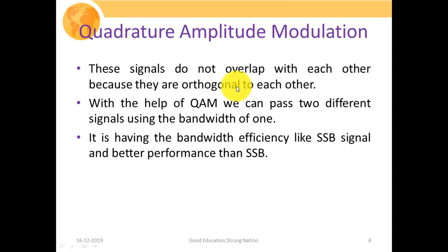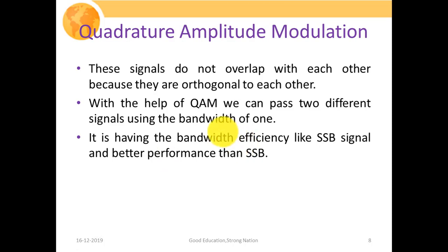Both signals possess the same frequency but will not overlap or interfere with each other since they are 90 degrees phase apart — that is, they are orthogonal to each other. With QAM we can pass two different signals using the bandwidth of one. QAM achieves bandwidth efficiency like an SSB signal and better performance than an SSB signal. Since we use the same bandwidth — twice FM — to pass two different signals, we have effectively achieved the bandwidth efficiency of SSB modulation.